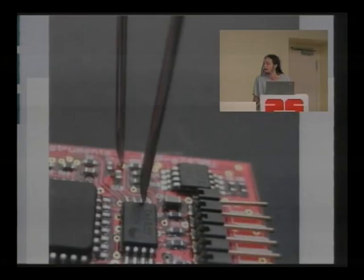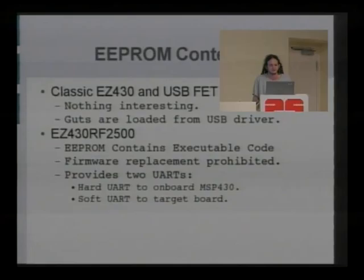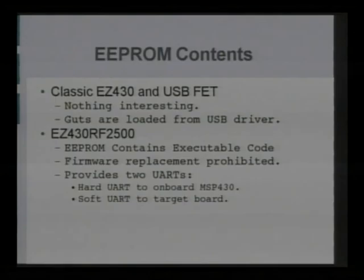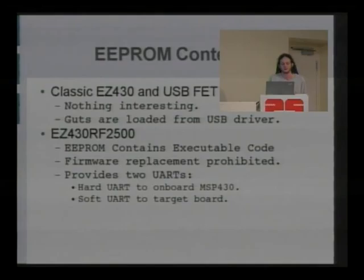These are the three main chips of the board: the MSP430 CPU, the TUSB3410 which is a USB-to-serial chip and also a CPU, and the CAT24C32 EEPROM which contains the code for the TUSB3410. In hardware, they're connected with a single I2C bus between all three chips, and a UART that only runs from the MSP430 to the TUSB.